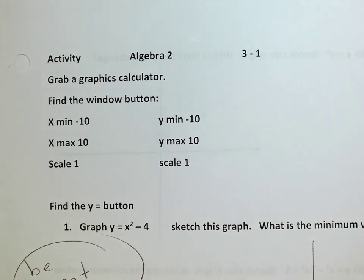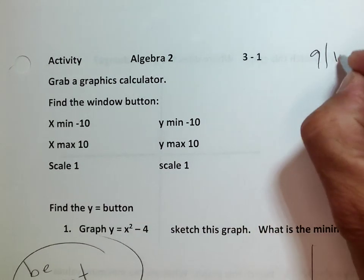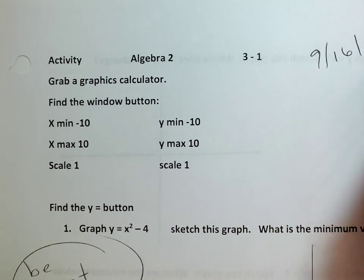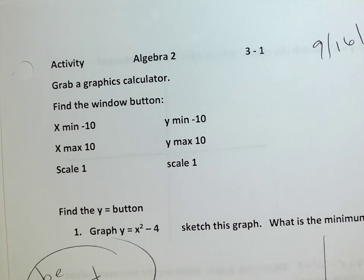It is September 16th, 9-16-19. Okay, so you can do it on Desmos or you can do it on a calculator. I'll probably do it on Desmos because Desmos is easier to see, right?